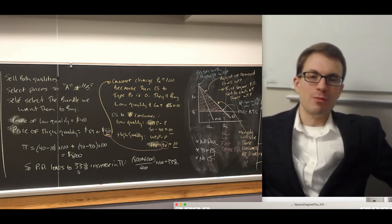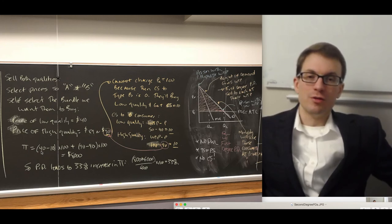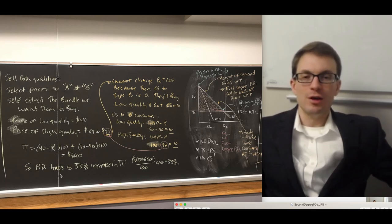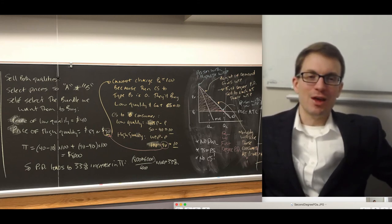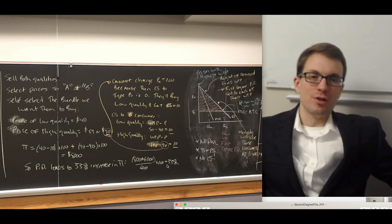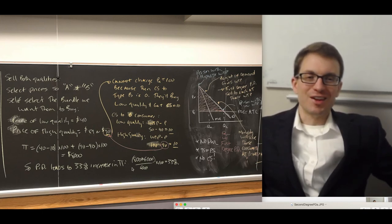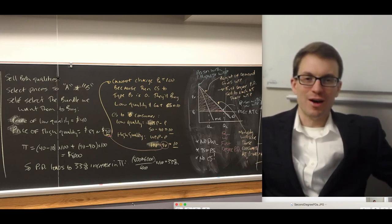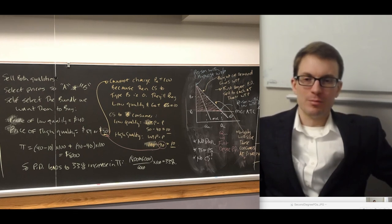Second-degree price discrimination gives us profits of $8,000: ($40 minus $10) times 100 plus ($90 minus $40) times 100. That's a 33% increase in profit over the $6,000 alternatives — calculated as (new minus old) divided by old times 100. This is the same calculation used in macroeconomics for finding inflation and price changes.